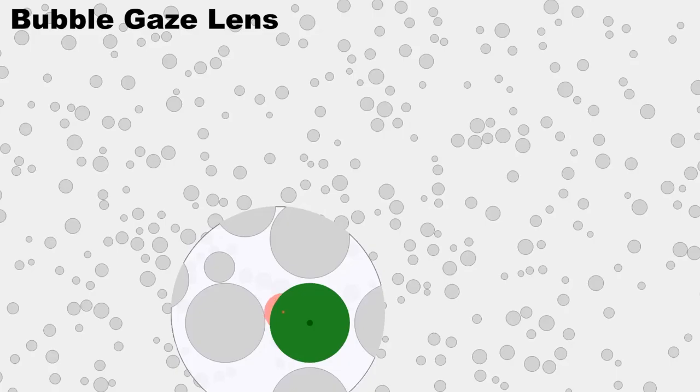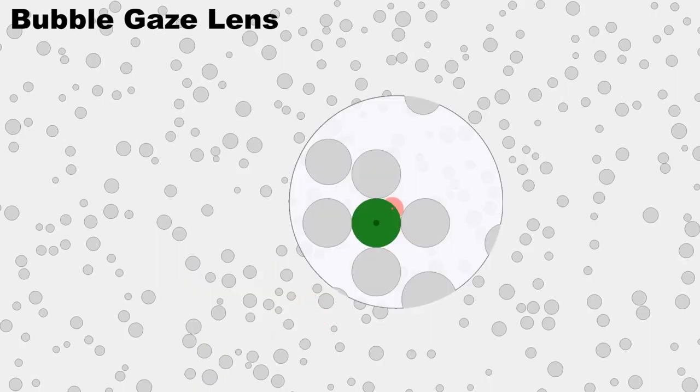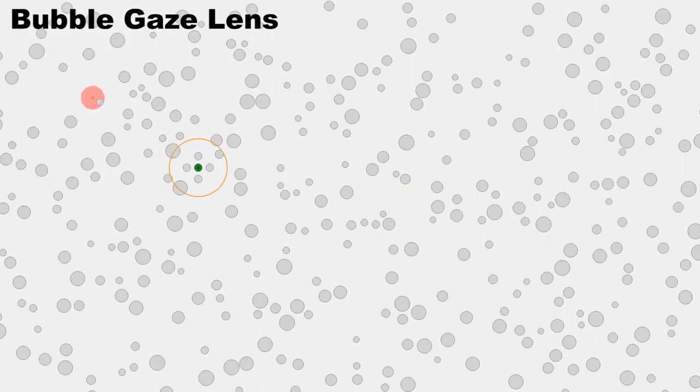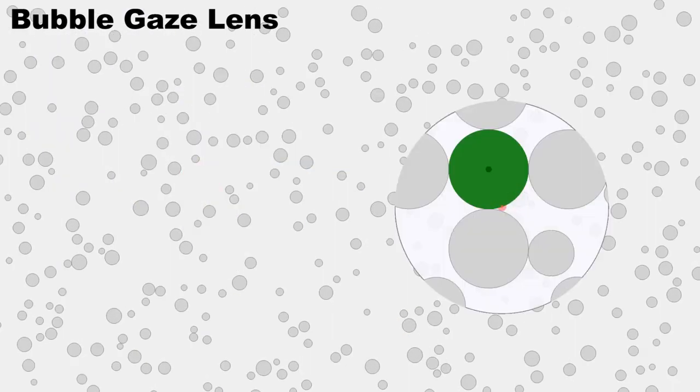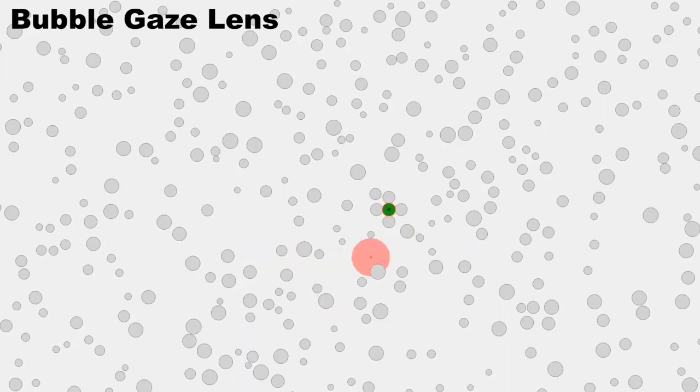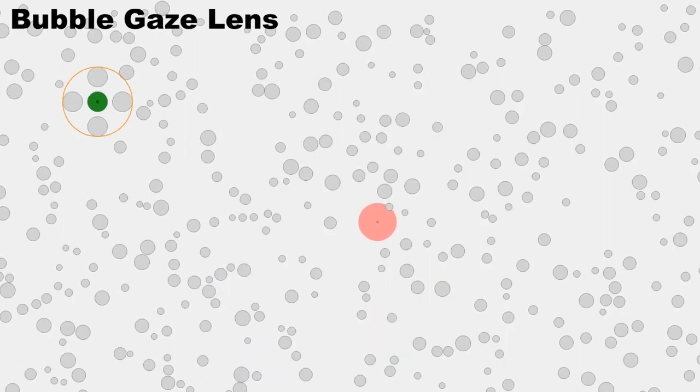This video shows a user actually using the bubble gaze lens in the experiment. It can be seen from the video that the magnifying lens magnifies the small target, making it easier to select.